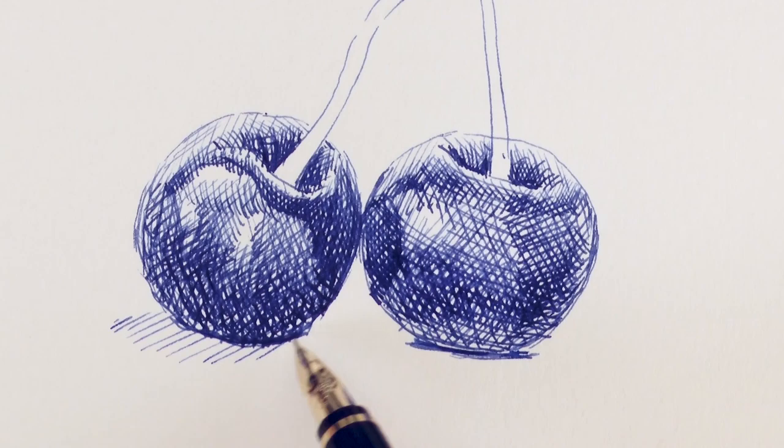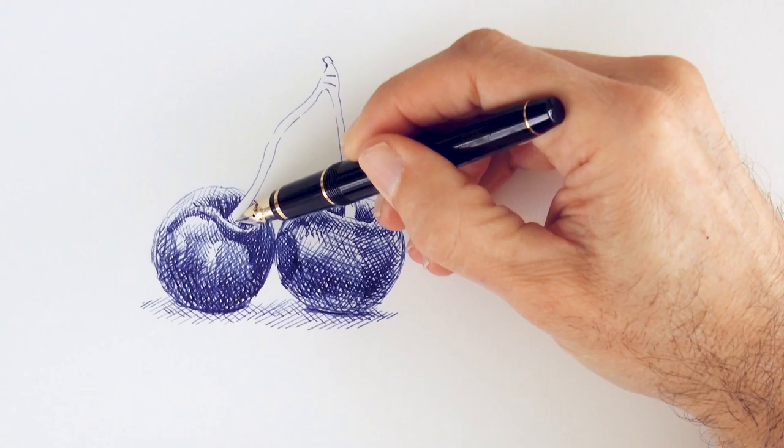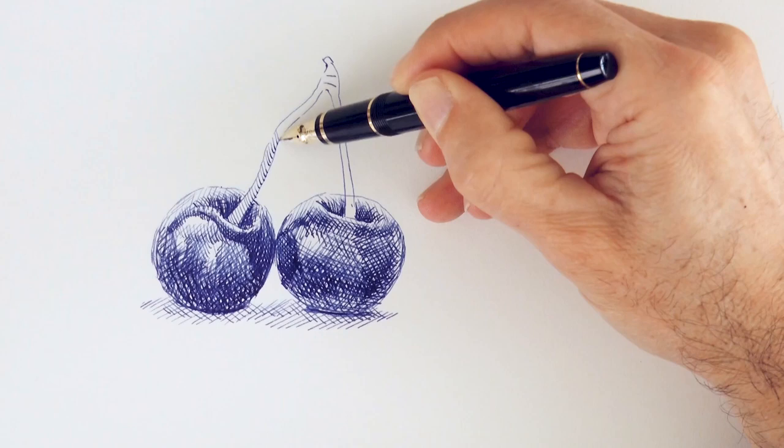And now let's draw the cast shadows on the ground. Something like this. And we draw the stems with short lines.